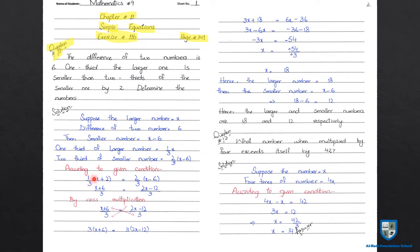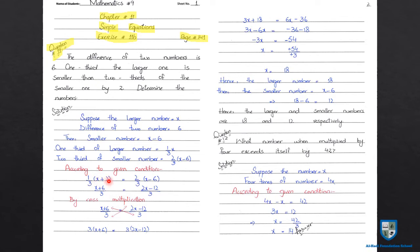अब next step में हमने इनका LCM लिया है। LCM लेंगे तो x plus 6 over 3 — क्योंकि 3 LCM है — तो x plus 2, जो है x के साथ 1 by 3 है। लेकिन 2 हमने अलग से add किया है, इसलिए जब LCM लेंगे तो 3 × 2 = 6 होगा। यहां bracket जो है वो x के बाद आती है, 2 के बाद नहीं। Next: 2 by 3 into x minus 6, तो 2x minus 12 over 3.